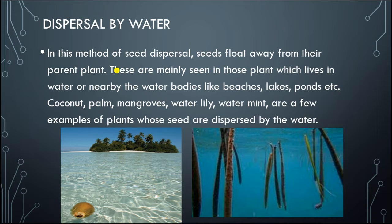For example, if we take coconut — the coconut has a very heavy seed inside, but it still floats in water and is dispersed by water. This is because the seed is covered by spongy layers of fiber filled with air, which is why it is light and can easily float. Examples like mangrove also follow the same method of dispersal.